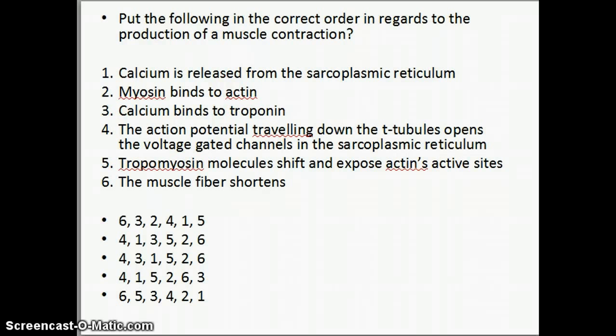Once the acetylcholine binds to these receptors it causes the action potential to travel down the sarcolemma down the T tubules and again if you remember when the T tubules have the action potential it opens up the voltage gated channels in the sarcoplasmic reticulum.